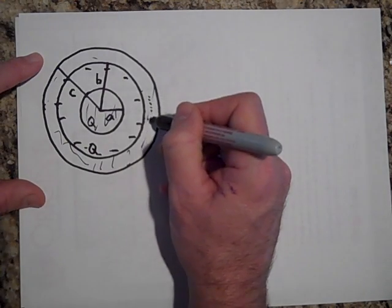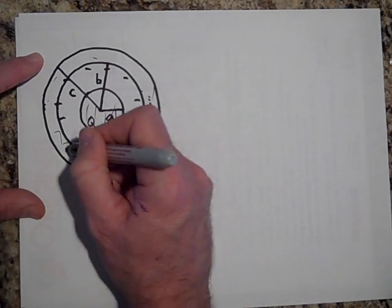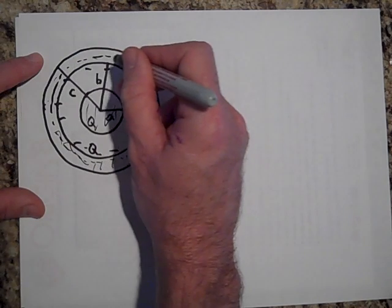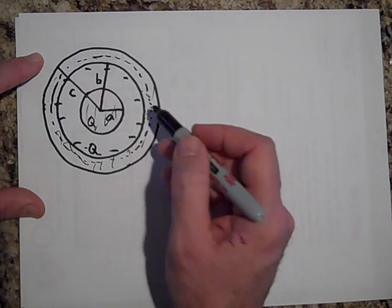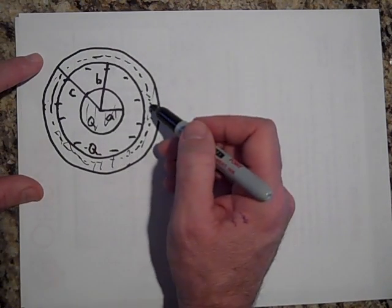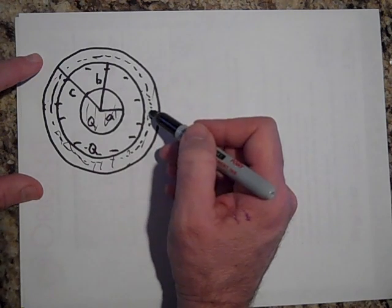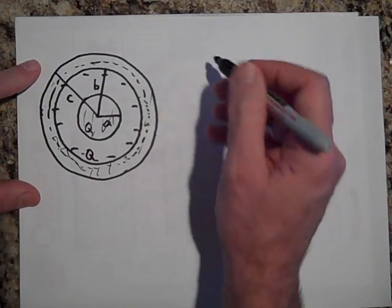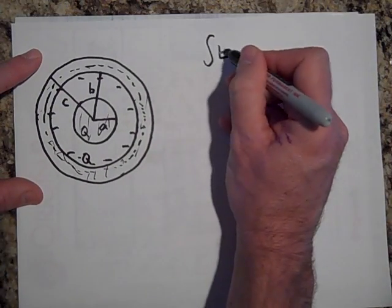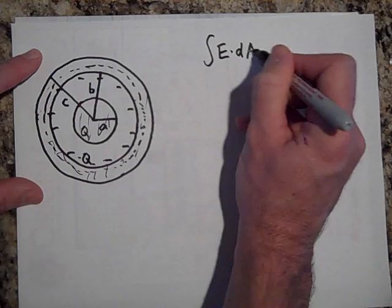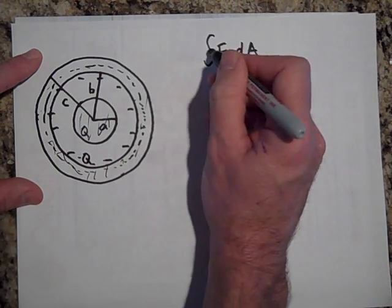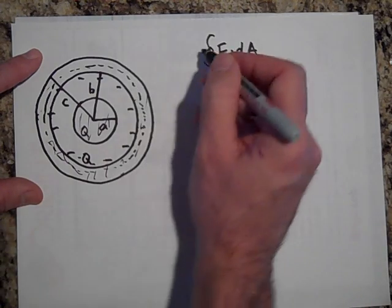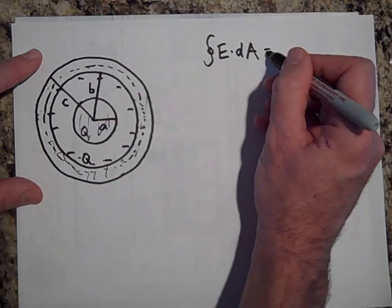Because you see this metal here, if I drew a Gaussian surface in here, see that Gaussian surface? There's no flux through there because metals never have electric field inside them. And so there's no flux there. There can't be because if there's no field, you can't have a flux through that Gaussian surface. So that has to equal zero.